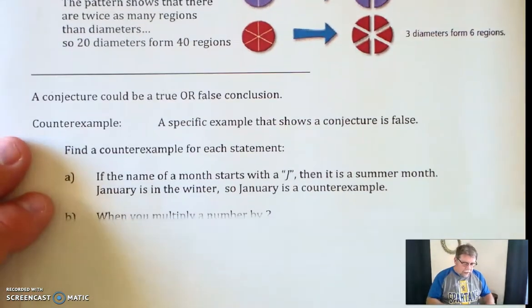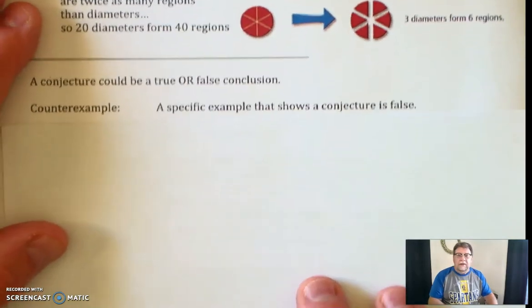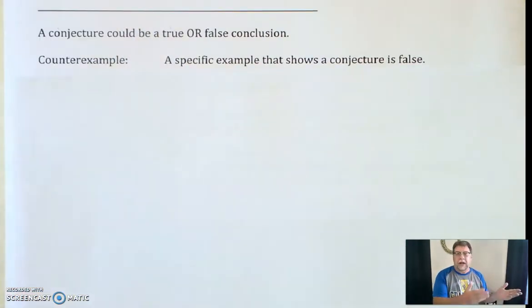As we move up, let's talk more about a conjecture. A conjecture can be a true statement, but it could also be a false statement, a false conclusion. So we're going to be looking at things called theorems, and we're going to say, is it a true theorem? Is it a false theorem or a statement? Is it true or false?